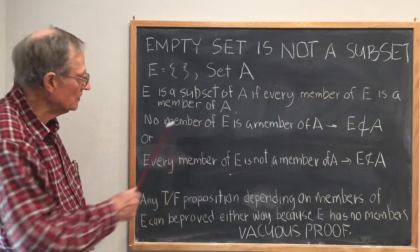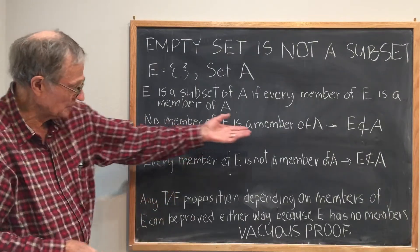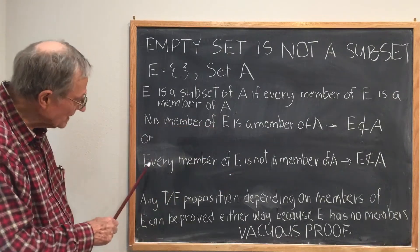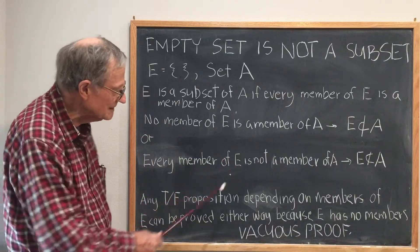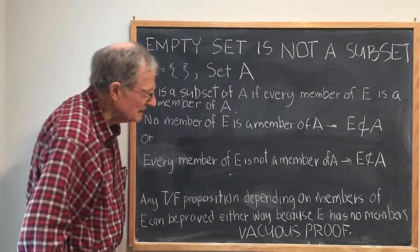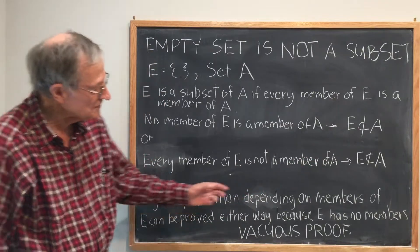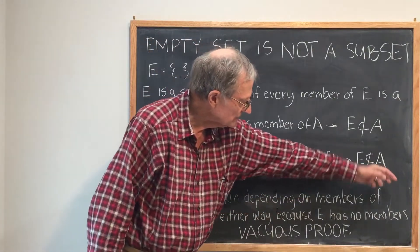This is true because E has no members, so it follows automatically. Or, I can also say that every member of E is not a member of A, in which case it also follows that E is not a subset of A.